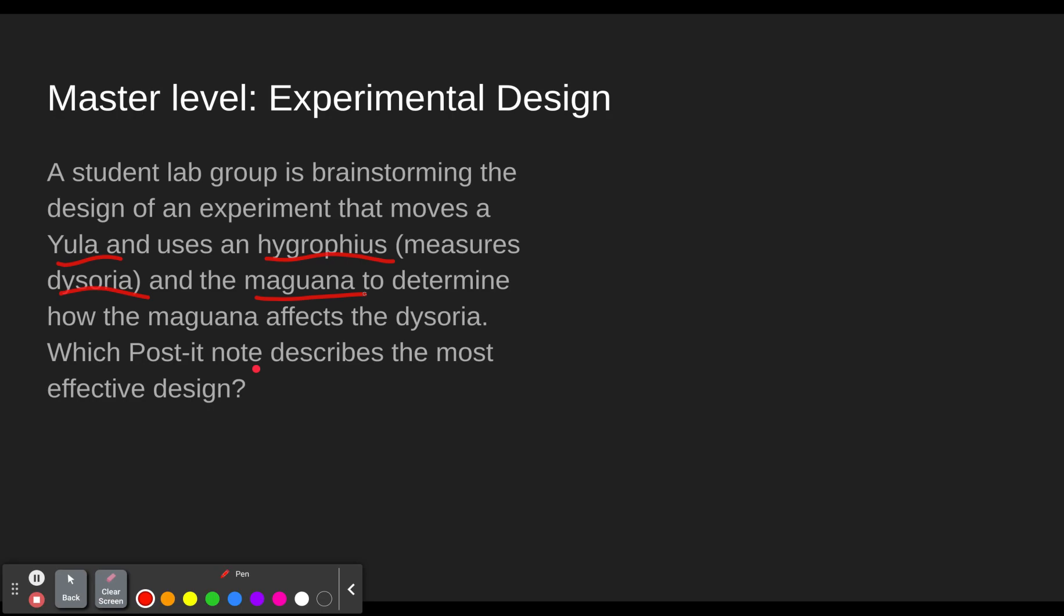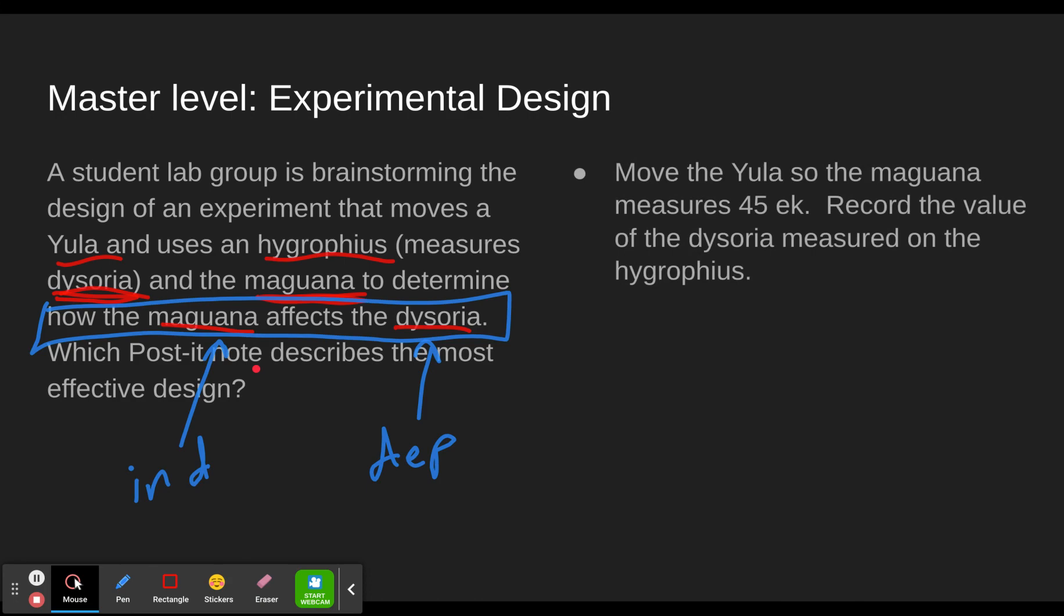So first of all, the Yula is just something that's going to move. It's the object that this experiment is being done on. So we don't have to worry too much about the Yula. It uses a Hygrophius. So that's some sort of measuring device. And then here we see our first variable, the dysoria. And the maguana is the other variable here. Determine how the maguana affects the dysoria. So this right here is our purpose. How does the maguana affect the dysoria? So since maguana is the thing that we're changing, we're seeing how it affects it, this will be the independent variable. And then this is the thing being affected. So this will be the dependent variable in this problem.